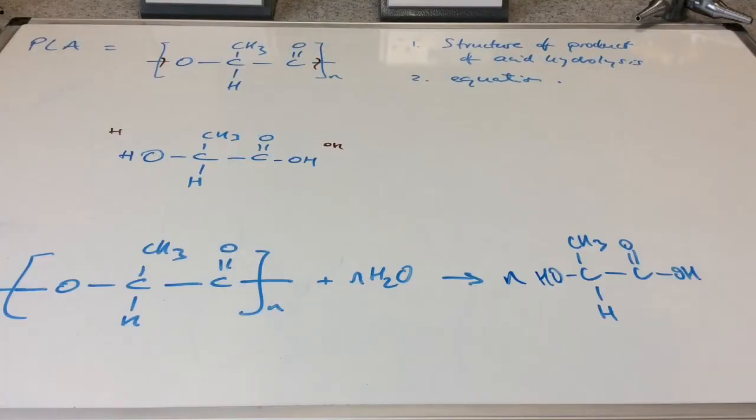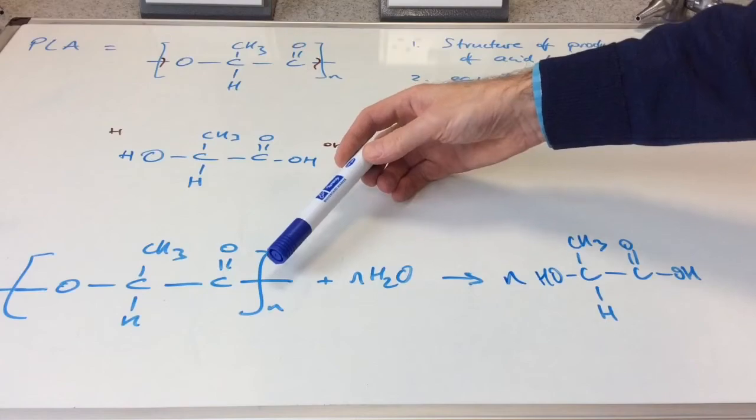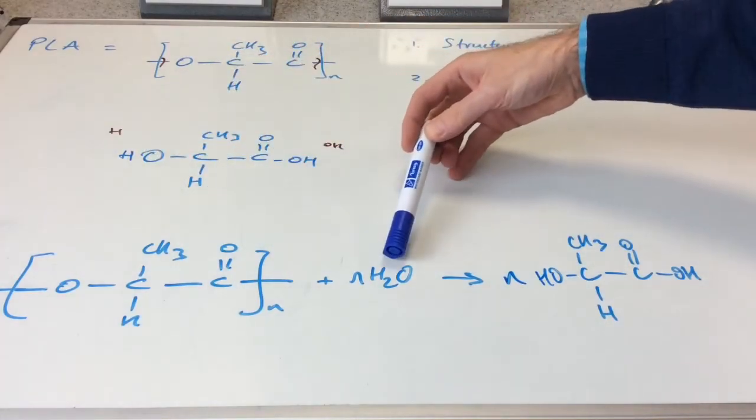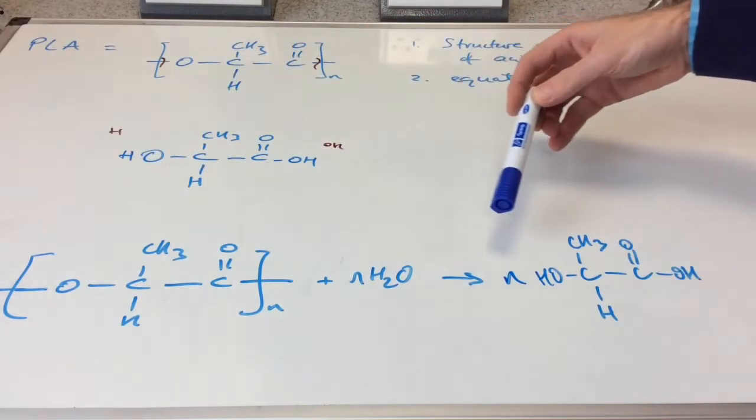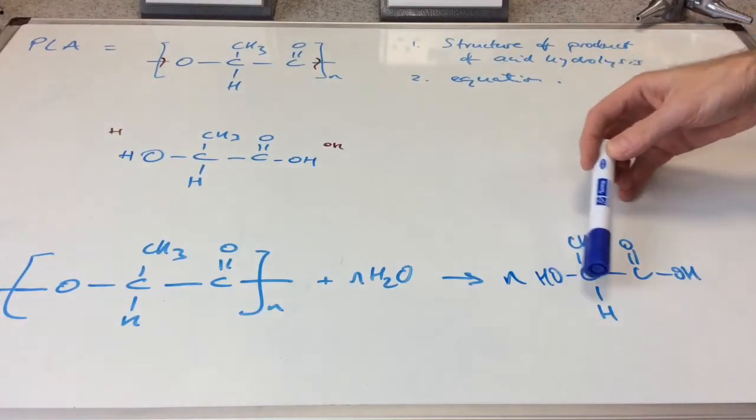You can see I've got the equation written up now for N moles of this repeat unit, in other words the polymer. We're going to need N moles of water. And that's going to generate N moles of this single monomer.